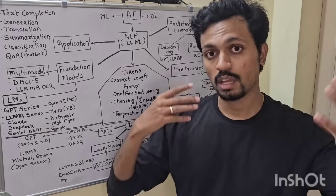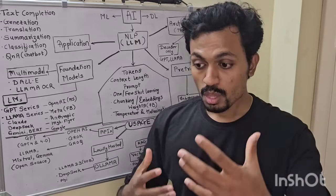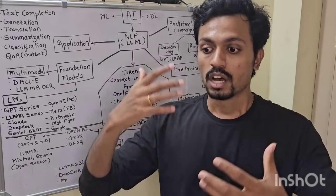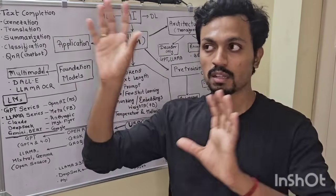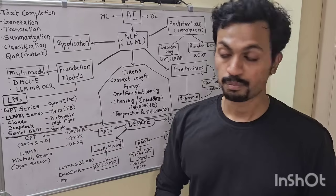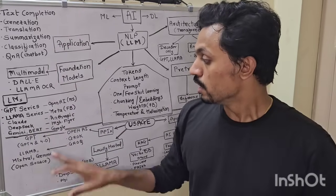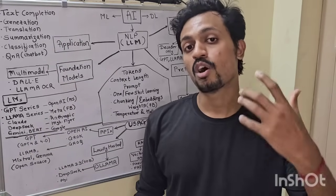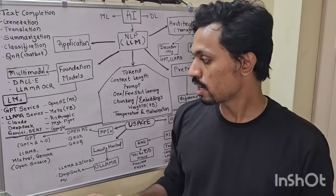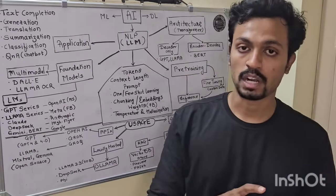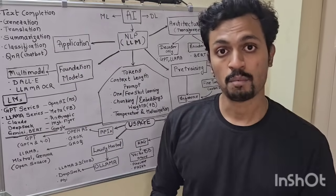DeepSeek is designed to think more humanly — it uses a chain of thoughts approach. Then Google — one of the pioneers in the industry. They also have a model called Gemini. If you do a Google search, the result is powered by Gemini, which is one of their models.